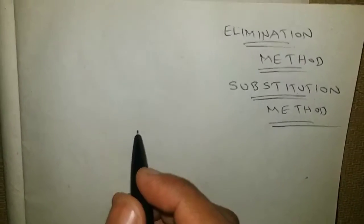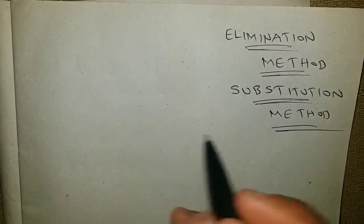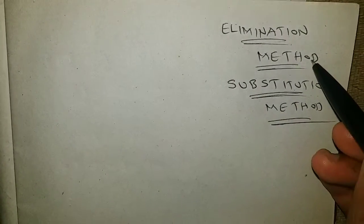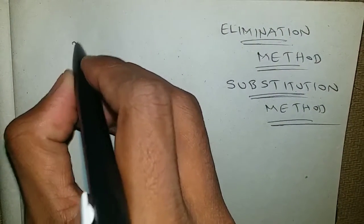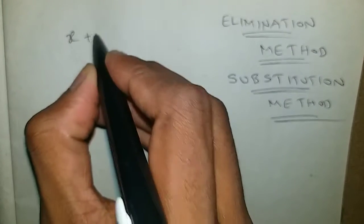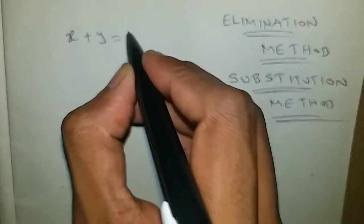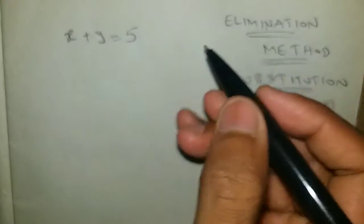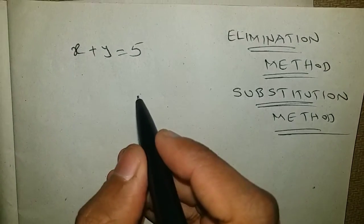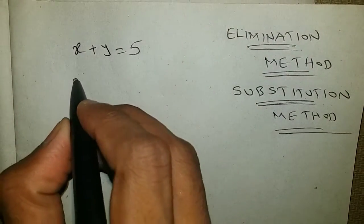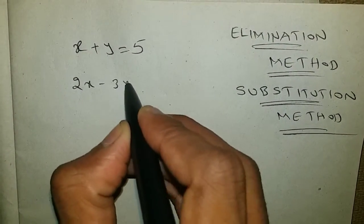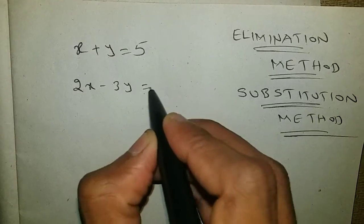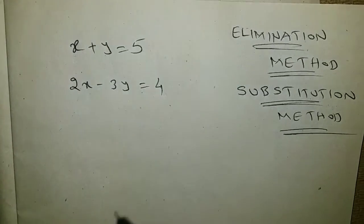Hello everyone, today we are going to learn the elimination method as well as the substitution method. We have two equations: one is x plus y is equal to 5, and the second one is 2x minus 3y is equal to 4.